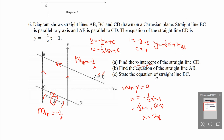Part C: state the equation of straight line BC. BC is parallel to the Y axis, so it is a vertical line with equation X equals to something, referring to the X coordinate or X-intercept. C is an X-intercept of line CD. From part A, the X-intercept of CD is negative 2, so the coordinate of C is (negative 2, 0). The X coordinate is negative 2, so the equation of straight line BC is X equals to negative 2.